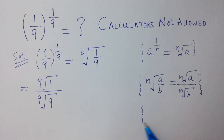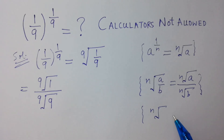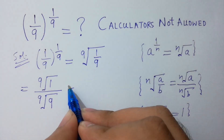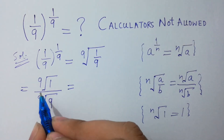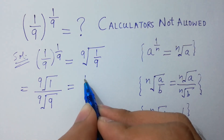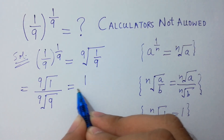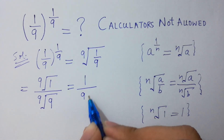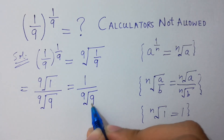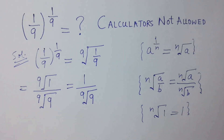Since n-th root of 1 equals 1, so 9th root of 1 equals 1, giving us 1 over 9th root of 9. Got it?